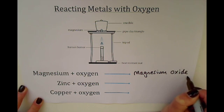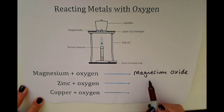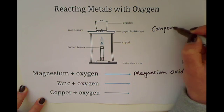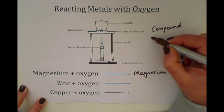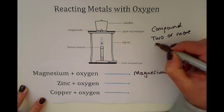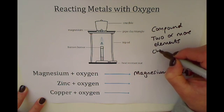We call this a compound because it is two different elements chemically bonded together. That's the definition of a compound: two or more elements chemically bonded together.